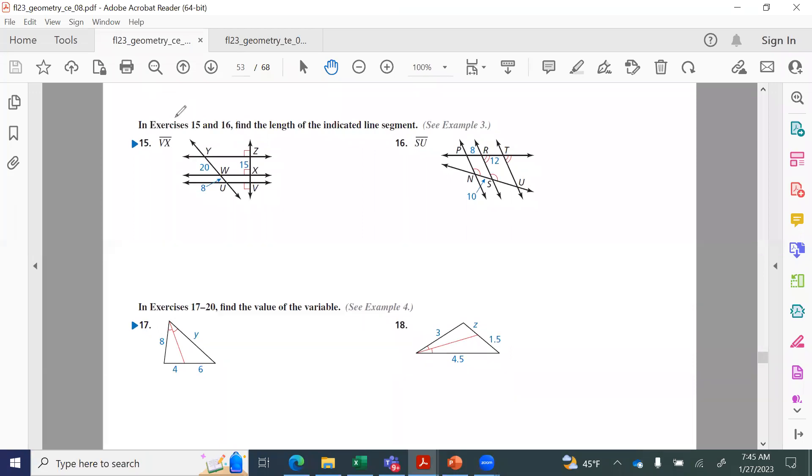All right, on this next one, for exercise 15, it says find the length of the indicated segment. Again, the same thing: setting it up using our parallel lines. They want us to find VX, which is this little segment right here. So again, use these lines as our fraction bars, set it up. We have 20 over 8 is equal to 15 over the piece we're trying to find. I'm just going to call it x for now. And then we can cross multiply and solve. So we have 20x equals 8 times 15.